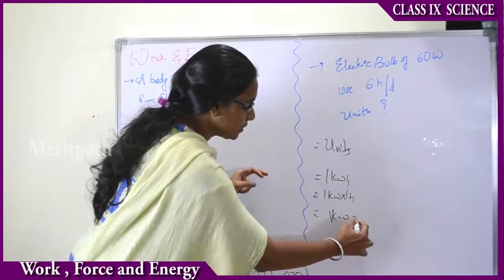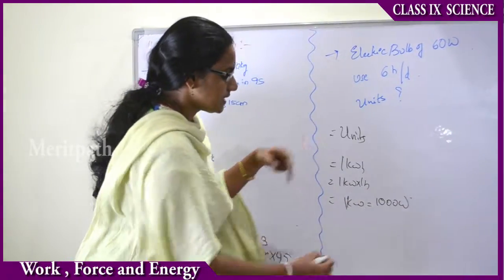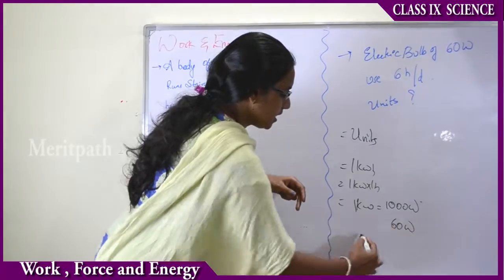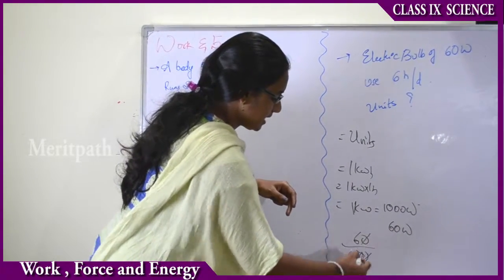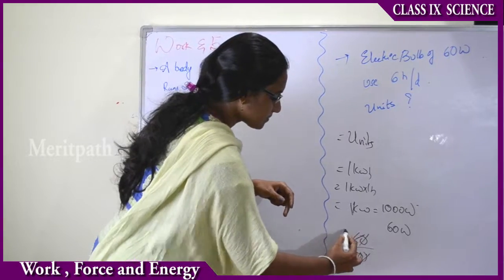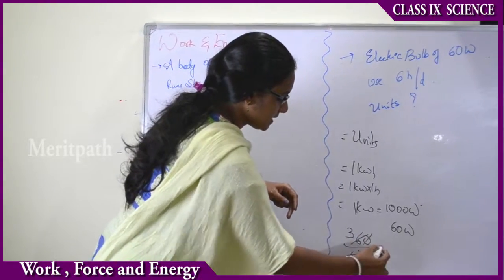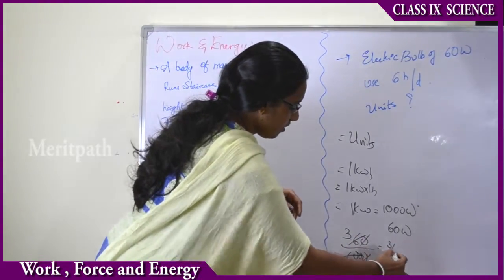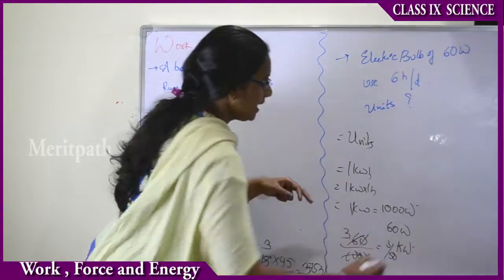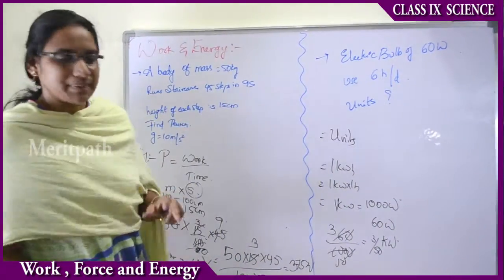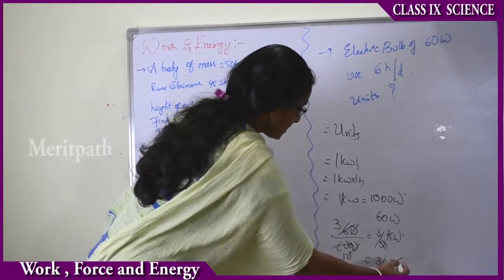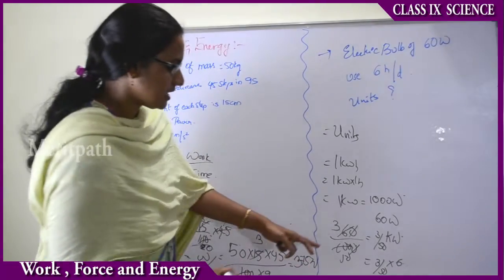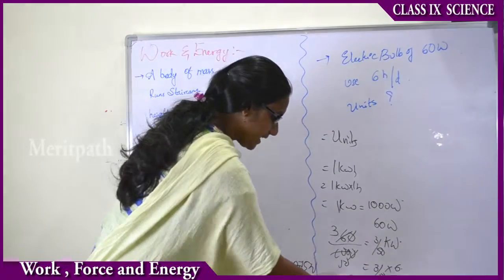Therefore, 60 watts equals to 3 by 50 kilowatts into the time taken, that is 6 hours per day. That is equals to 3 by 50 into 6 hours per day. After calculation, we will be getting the result.